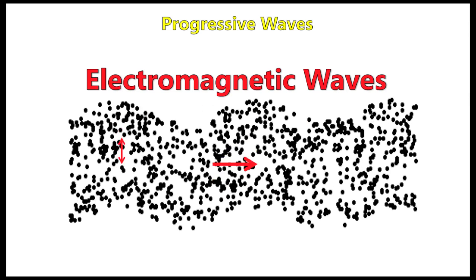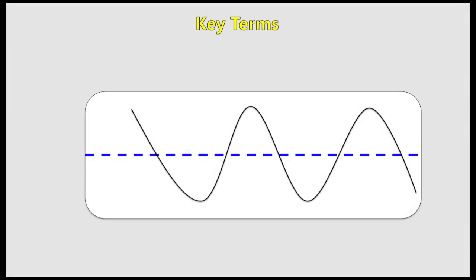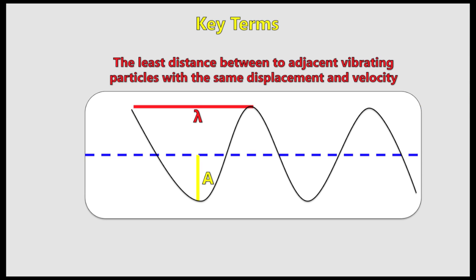Key terms: The displacement of a vibrating particle is the distance and direction from its equilibrium position. The amplitude is the maximum displacement of a vibrating particle. The wavelength is the least distance between two adjacent vibrating particles with the same displacement and velocity, i.e. trough to trough or peak to peak on a little wave.